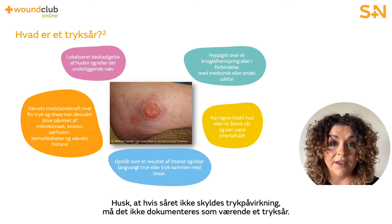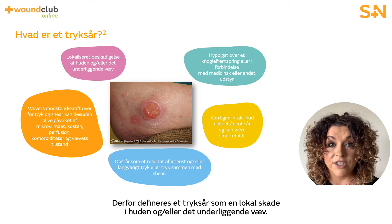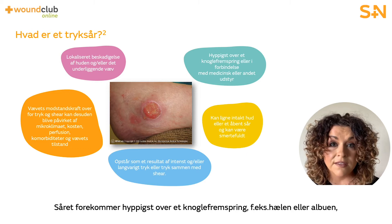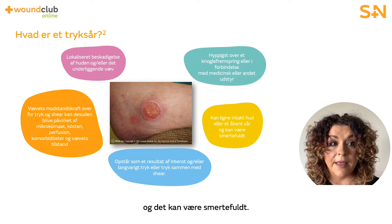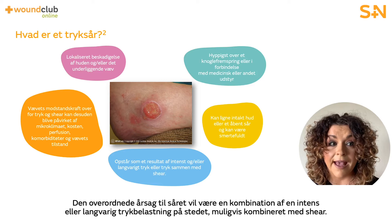Remember that if a wound is not caused by pressure it should not be documented as a pressure ulcer. A pressure ulcer is defined as localised damage to the skin and/or the underlying tissue. The ulcer is usually over a bony prominence, for example heels or elbows. There may be associated pain with the ulcer. The overarching cause will be as a result of intense or prolonged pressure to the area, and can be in combination with a shearing force.